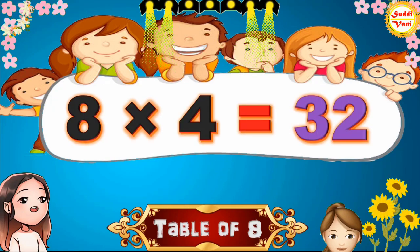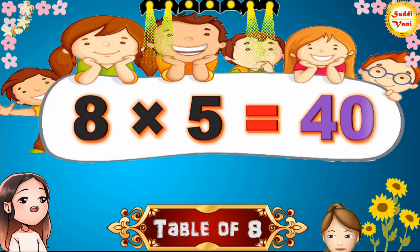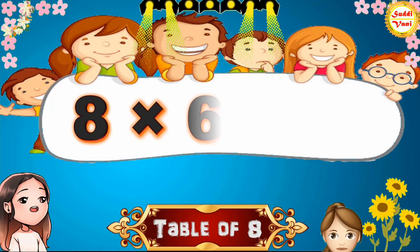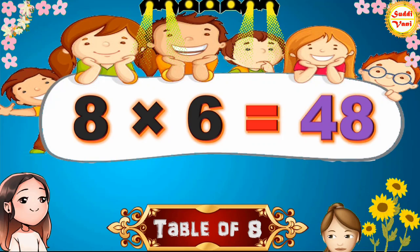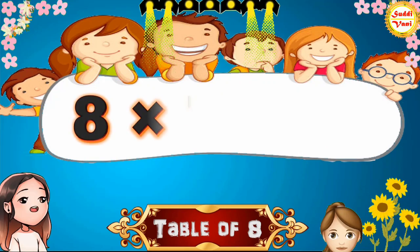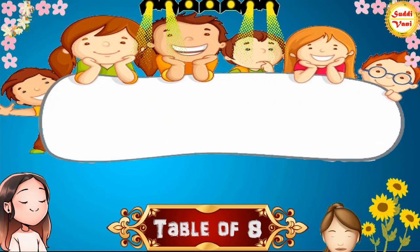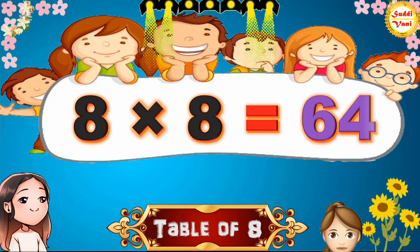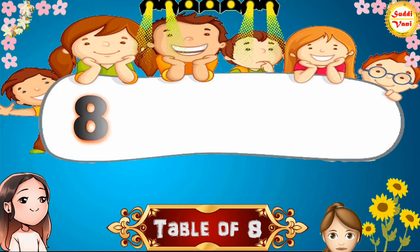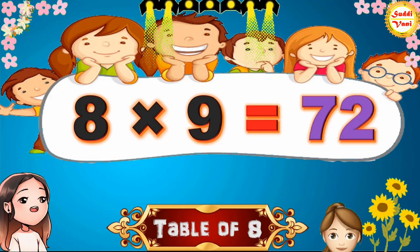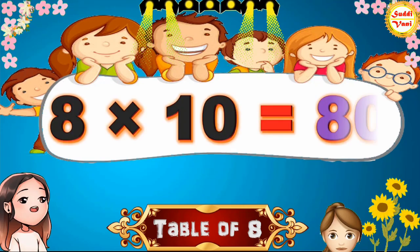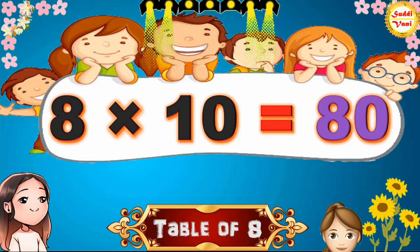8 × 4 = 32, 8 × 5 = 40, 8 × 6 = 48, 8 × 7 = 56, 8 × 8 = 64, 8 × 9 = 72, 8 × 10 = 80.